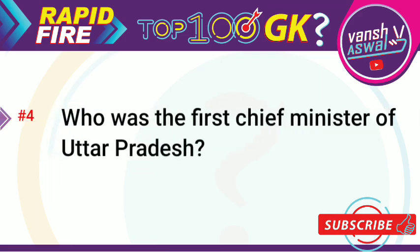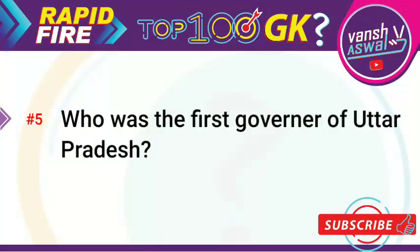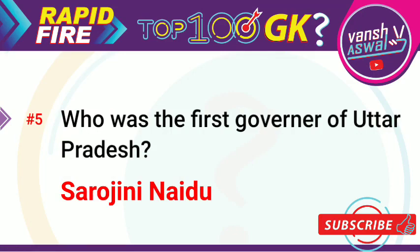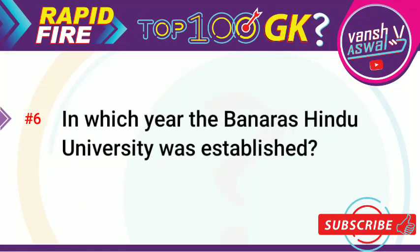Question 4: Who was the first Chief Minister of Uttar Pradesh? Answer is Govind Ballabh Pant. Question 5: Who was the first Governor of Uttar Pradesh? Answer is Sarojini Naidu. Question 6: In which year was Banaras Hindu University established? Answer is 1916.